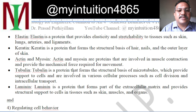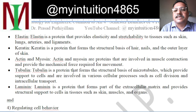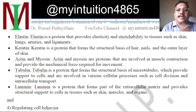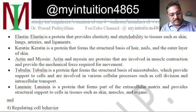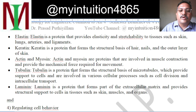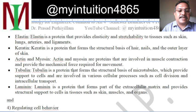Elastin is a protein which provides elasticity and stretchability to tissues such as skin, lungs, arteries and ligaments. Keratin is a protein which forms the structure of our hair, nails and the outer layer of skin — they are all keratin. Actin and myosin are proteins involved in muscle contraction and provide the mechanical force required for movement. Tubulin is a protein which forms the structural basis of microtubules, provides support to cells and is involved in cellular processes such as cell division and intracellular transport.